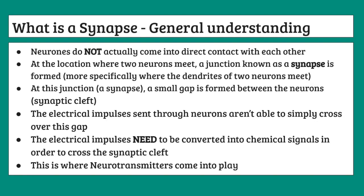Now that we've established the prerequisite information, we can go straight into it and ask: what is a synapse? The first key piece of understanding is that neurons don't actually come into direct contact with each other. At the location where two neurons meet, a junction known as a synapse is formed — specifically where the dendrites of two neurons meet. For GCSE, all you need to know is that a synapse is the junction where two neurons meet.